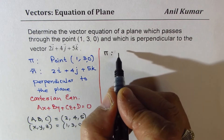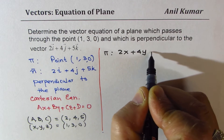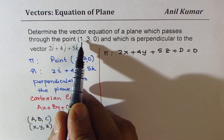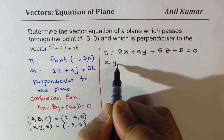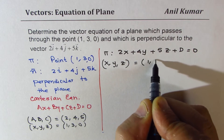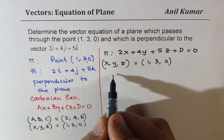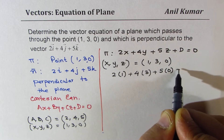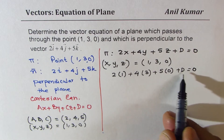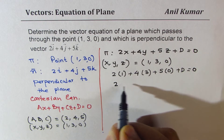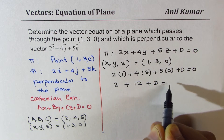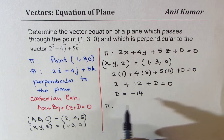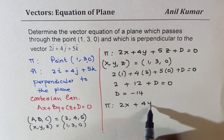The plane equation should be written as 2x plus 4y plus 5z plus D equals 0. To find D, we substitute the point (1, 3, 0): 2 times 1 plus 4 times 3 plus 5 times 0 plus D equals 0. So 2 plus 12 plus D equals 0, which gives us D equals minus 14.